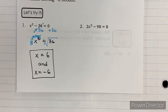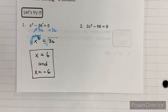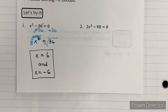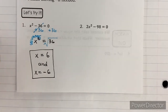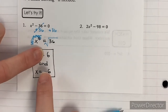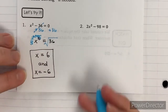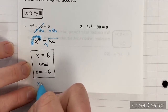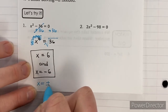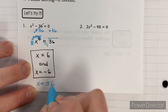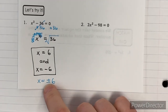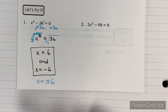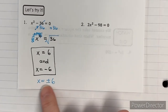I'll show you shorthand for writing this — if you have positive and negative of the same number, we write it as plus or minus 6. That little symbol means we have a positive 6 and a negative 6. You're going to see me write it this way a lot.